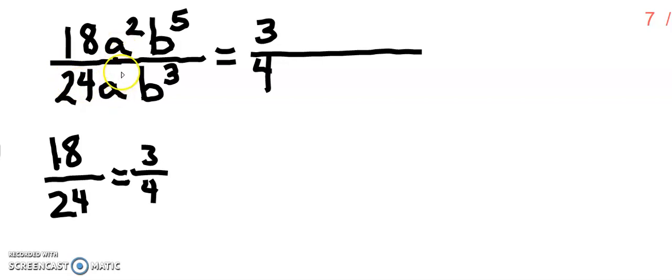And now we want to divide a squared by a. Well, a is a to the 1. It's an invisible 1 there. That's not written. So a squared divided by a to the 1 is just a. And b to the 5th divided by b to the 3rd is b squared. Remember, when you divide indices, you just subtract.